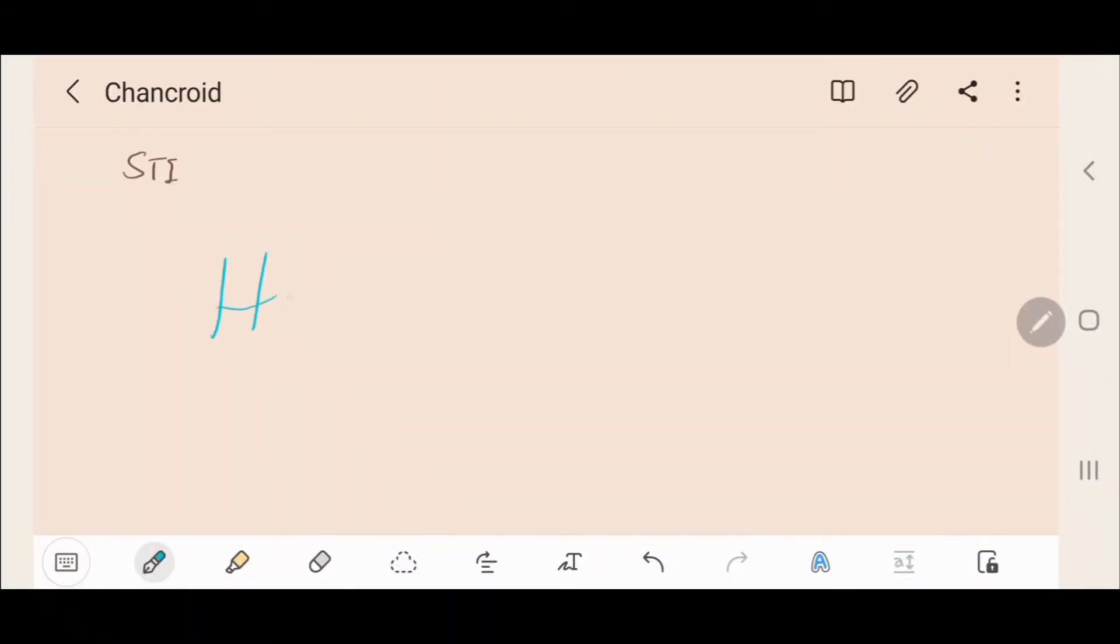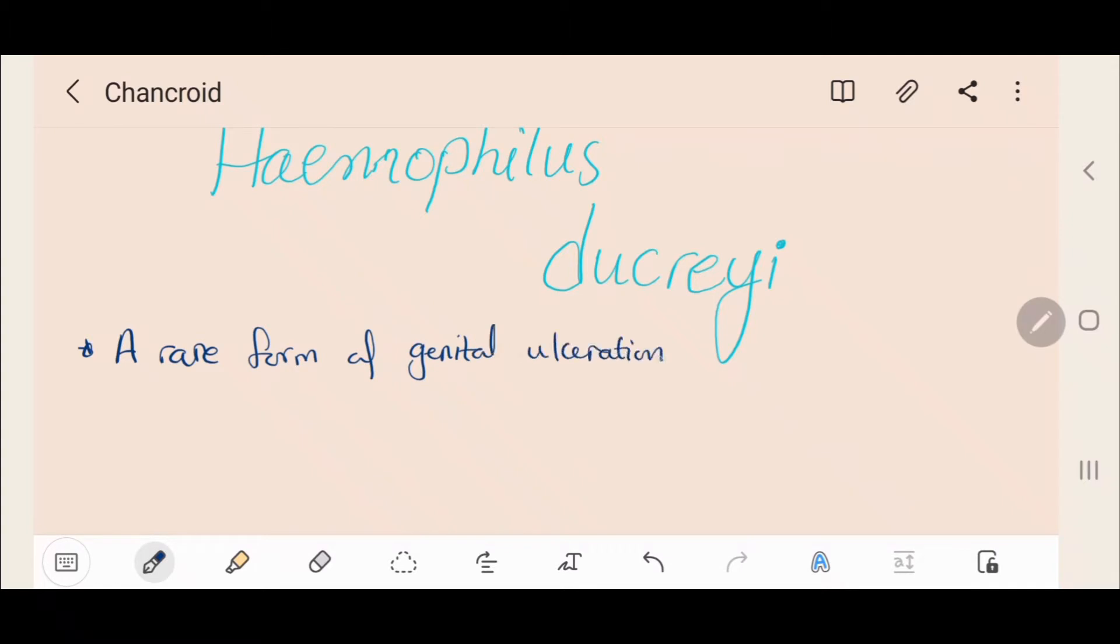Chancroid is a sexually transmitted infection caused by the bacterium Haemophilus ducrii. It is a rare form of genital ulceration that presents with or without bubo formation. Bubos are localized swollen painful lymph nodes.